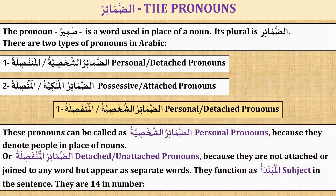These pronouns can be called al-zamair al-shakhsiyyah, personal pronouns, because they denote people in place of nouns. Or they can be called al-zamair al-munfasilah, detached or unattached pronouns, because they are not attached or joined to any word but appear as separate words. They function as al-mubtada, the subject in the sentence. There are fourteen pronouns.